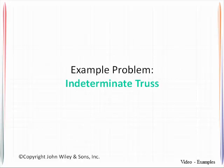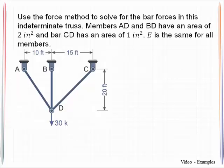Well hello again. In this example you will learn how to apply the force-based approach to solve for bar forces in a truss which is internally indeterminate. We are going to look at this three-member truss and recognize here that members AD and BD have a certain cross-sectional area, CD has one that is different, but E is the same for all members.